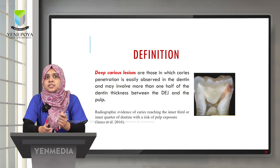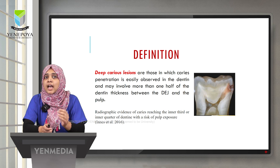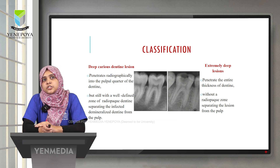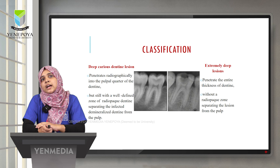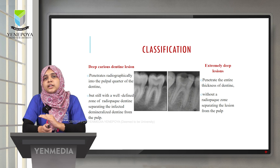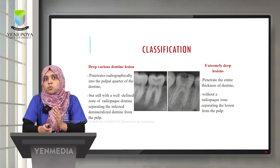Deep caries lesions are those in which caries penetration is easily observed in the dentine and may involve more than one half of the dentine thickness between the DEJ and the pulp. They can be classified as deep caries dentine lesions, which penetrate radiographically into the pulpal quarter with a well-defined radiopic zone separating infected dentine from the pulp, or extremely deep lesions, which penetrate the entire dentine thickness with no radiopic zone, meaning caries is involving the pulp.